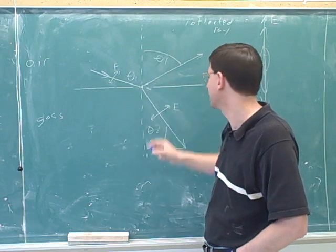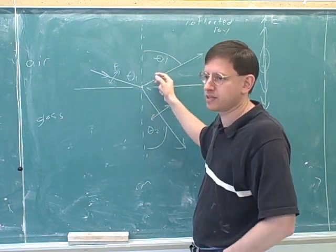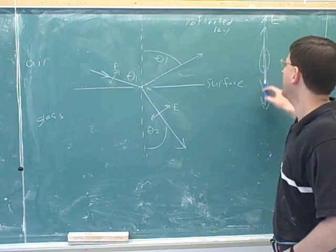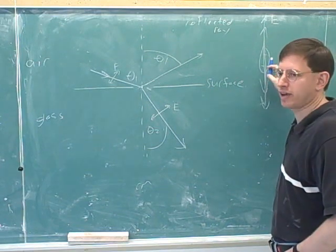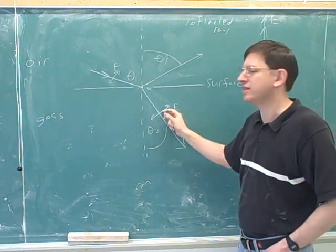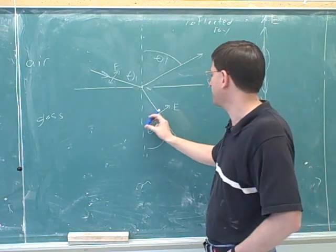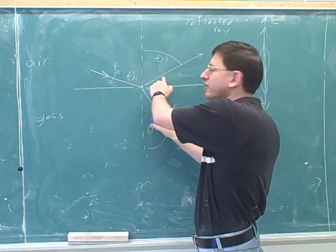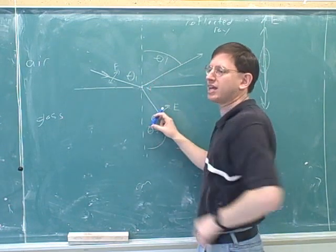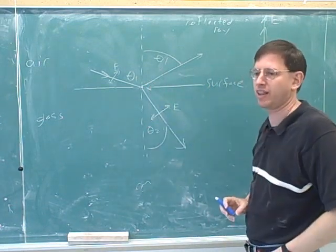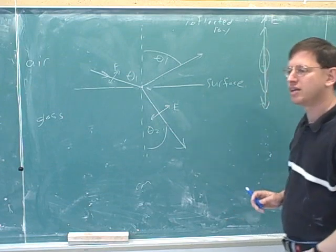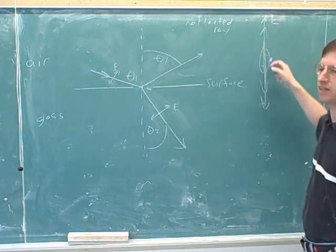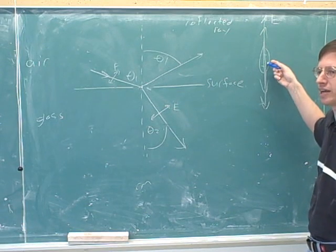We're going to focus on how it creates the reflected ray. This is the oscillation that creates it. But remember, an oscillation cannot create a wave that travels in the direction that it's oscillating. So the way I've drawn this is impossible, because the electric field is oscillating in this direction, but the reflected ray is parallel to that. The ray can never be parallel to the direction of oscillation.